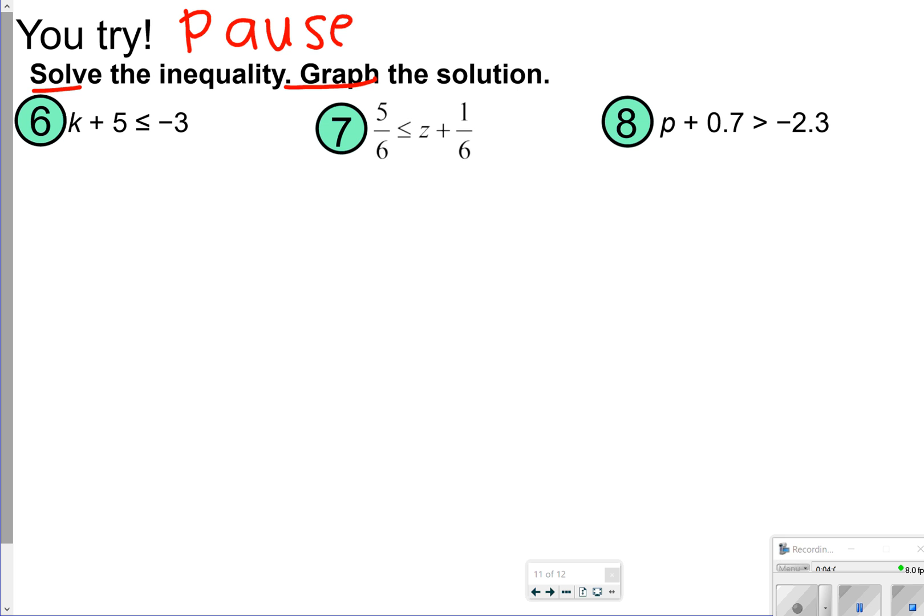Alright, so for number 6, we should have subtracted 5 from both sides. So we get k is less than or equal to negative 8. I'm going to go ahead and graph this one. Negative 9, negative 8, negative 7. That is a closed circle pointing left.